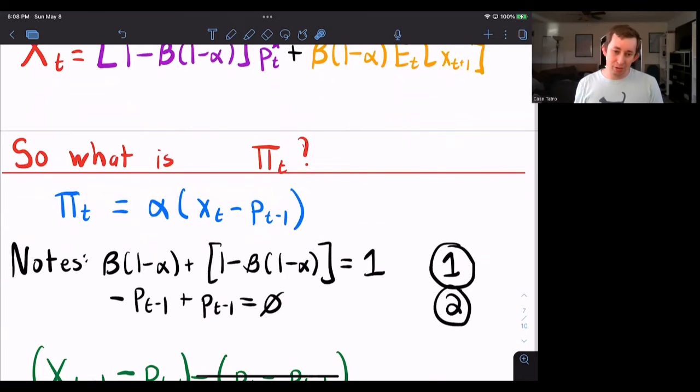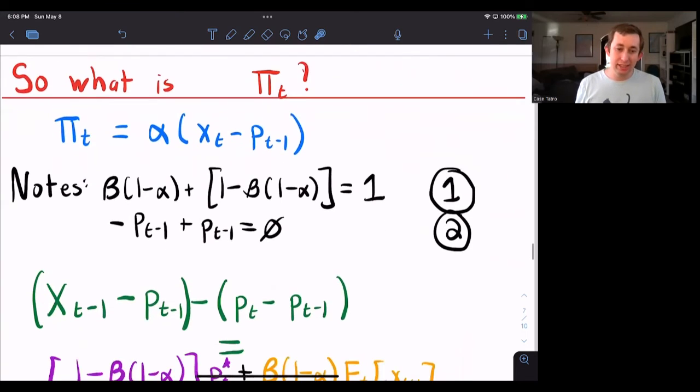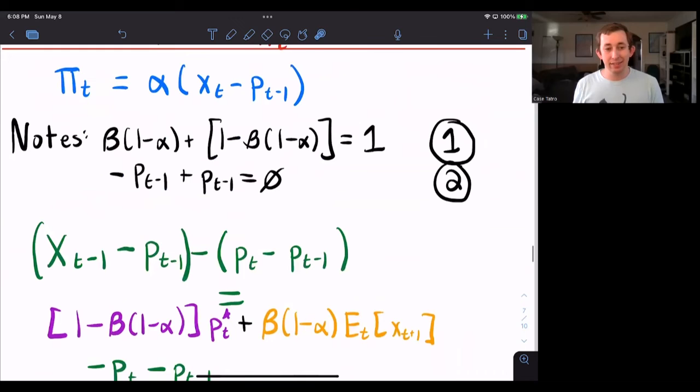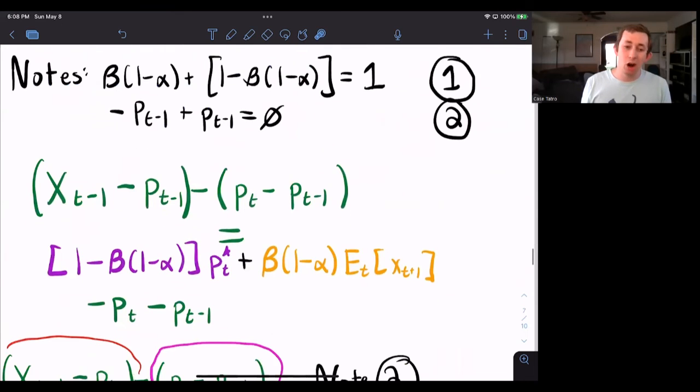A couple of notes that'll help us with the math. Beta times one minus alpha plus one minus beta times one minus alpha is equal to one. And if I add and subtract the same thing, that's equal to zero. So I can do that freely, which means that I can say that at the last period's optimal price minus last period's price level minus today's price level minus yesterday's price level. Again, I'm just using note two there to add zero basically to both sides. That's all I'm doing.